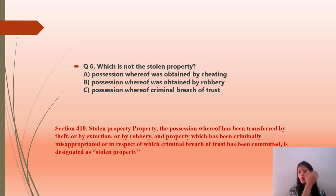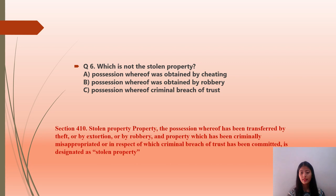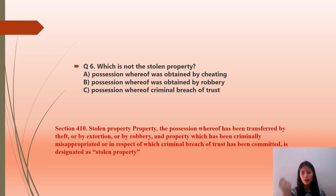You should know about this. Option A: possession whereof was obtained by cheating; option B: possession whereof was obtained by robbery; option C: possession whereof was obtained by criminal breach of trust. First, identify which of these is stolen property. Section 410 of IPC says that property the possession whereof has been transferred by theft, by extortion, by robbery, and property which has been criminally misappropriated or in respect of which criminal breach of trust has been committed, is designated as stolen property.